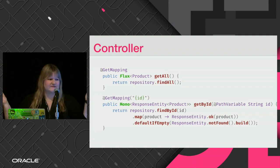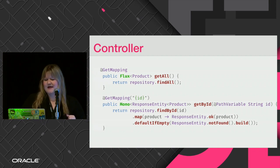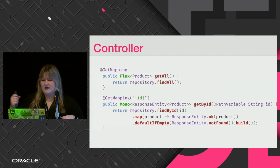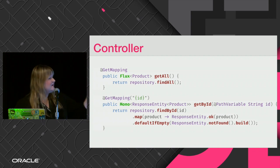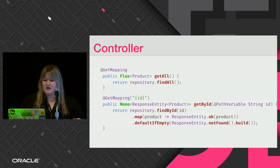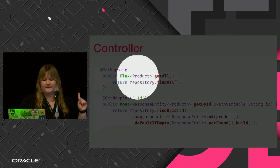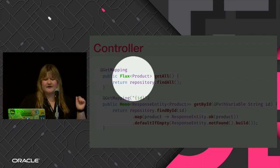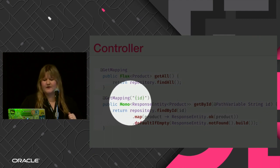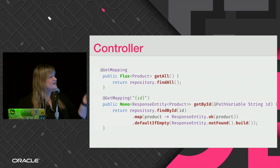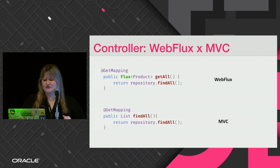For the controller, we have GET — you can also do POST, PUT, DELETE. One thing to notice: we have repository.findAll() and findById(), and then we can do a bit of functional programming — mapping the product into a ResponseEntity, and if it's not found we can return a not-found. But again, notice the return type of the method: it's Flux, not a list of products, for multiple objects, and Mono for a single object.